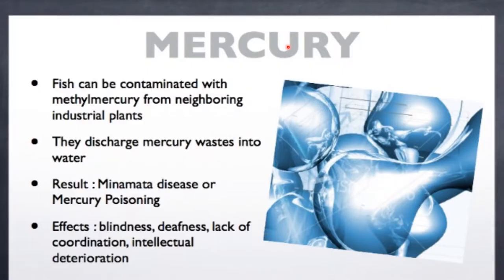The first metal I am going to explain is mercury. Fish can be contaminated with methyl mercury from neighboring industrial plants. They discharge mercury waste into water, which results in Minamata disease or mercury poisoning. The effects of mercury poisoning include blindness, deafness, lack of coordination, and intellectual deterioration.